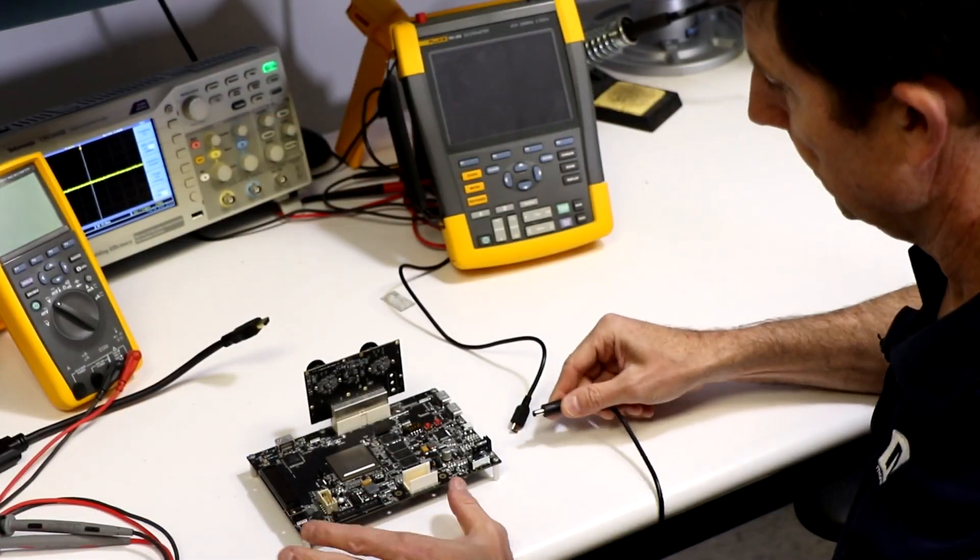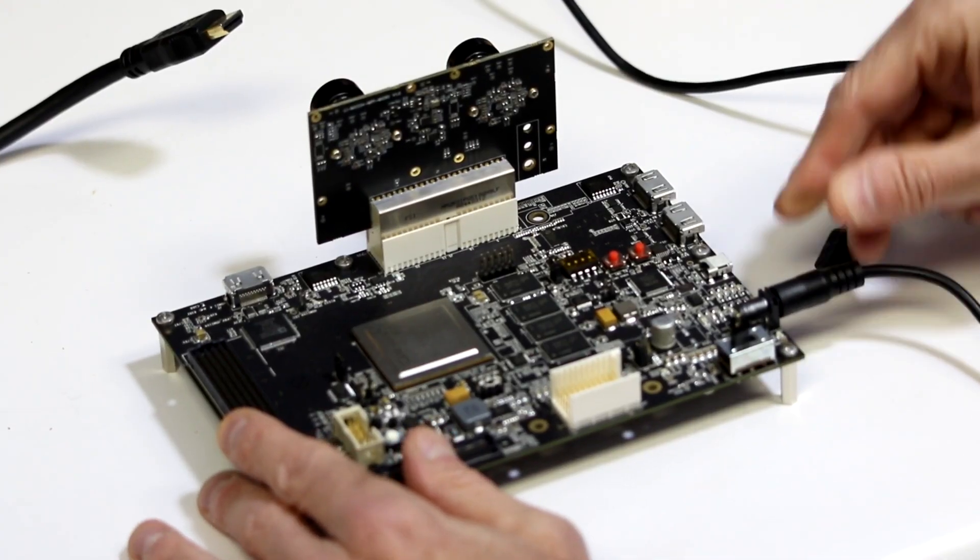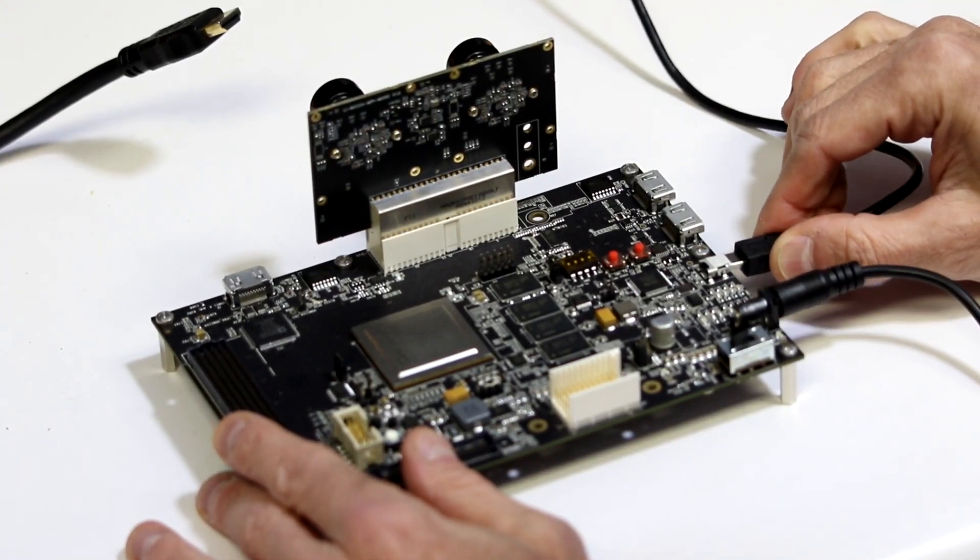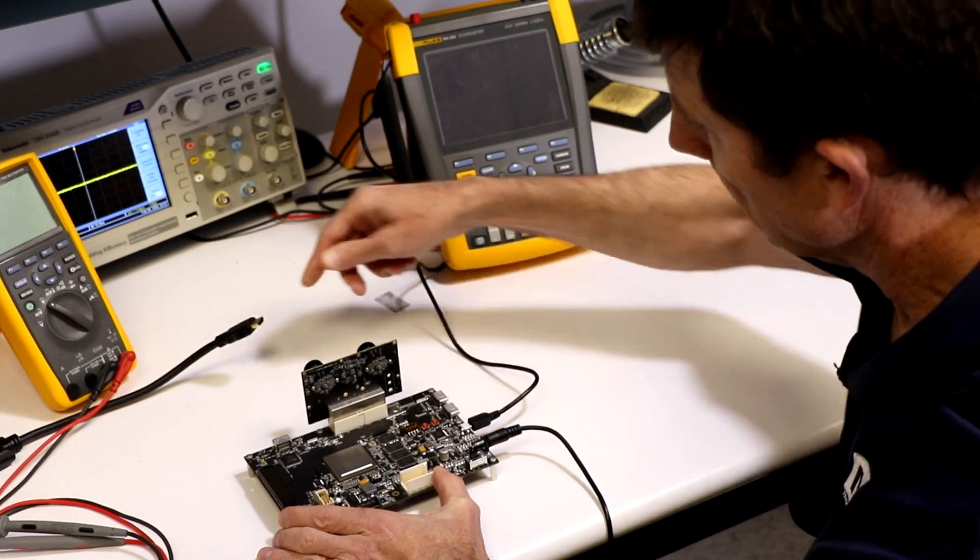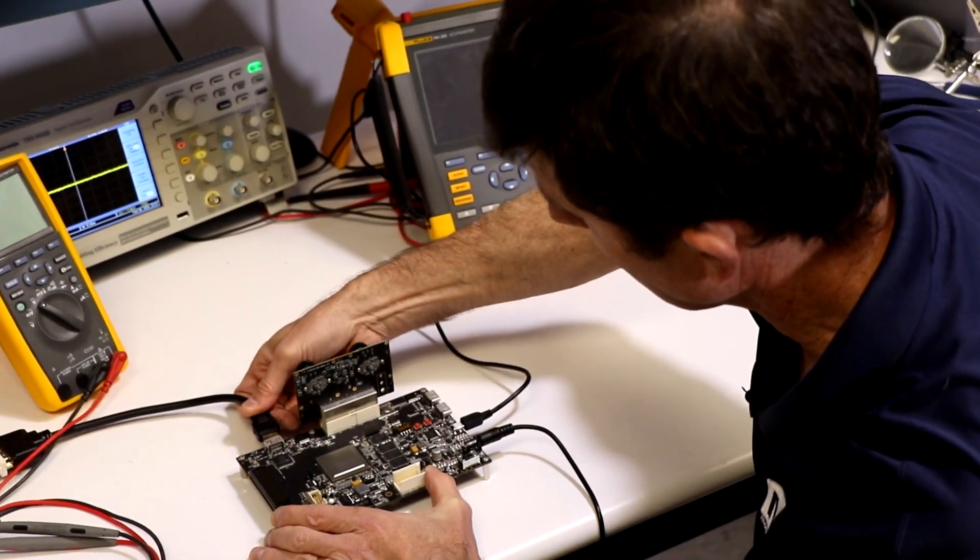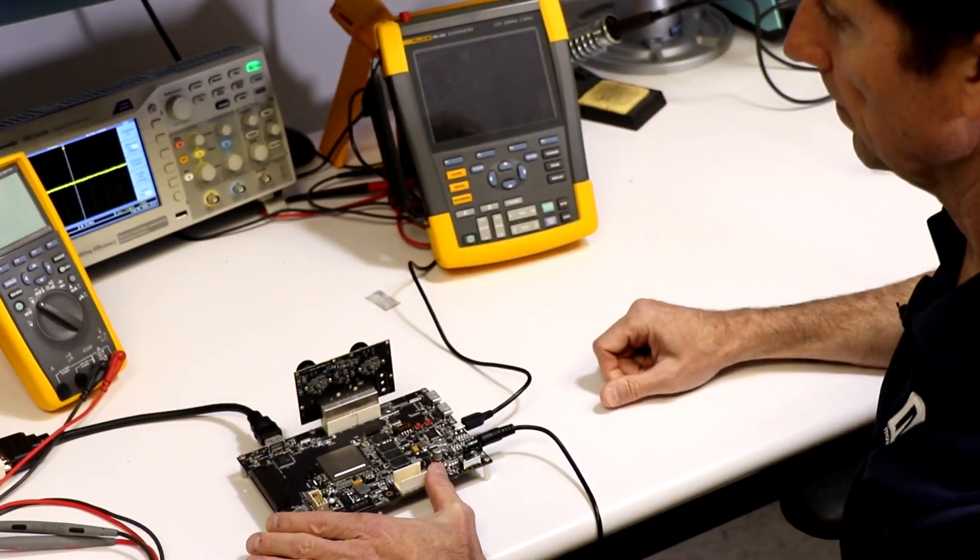Now that the board is programmed, let's get the demo running. Plug in power to the PolarFire board at J20. Plug in the Mini USB plug from the PolarFire board J12 to the USB port on your PC. Connect an HDMI cable from J2 of the PolarFire to an HDMI port on your display.